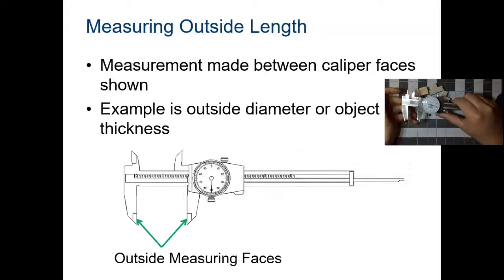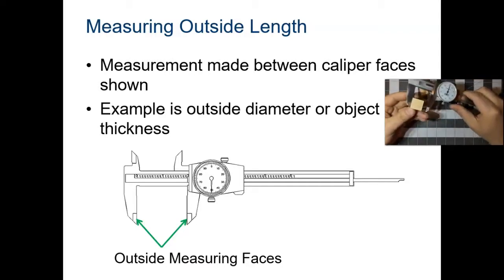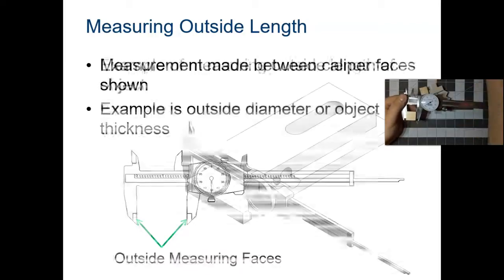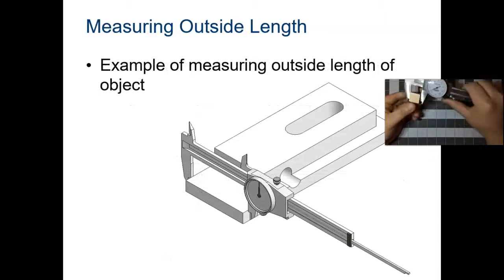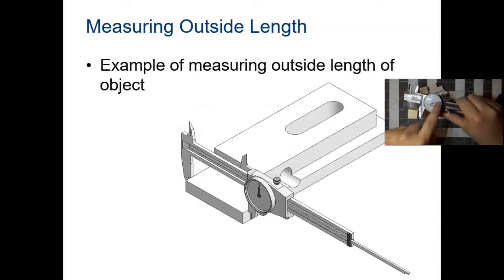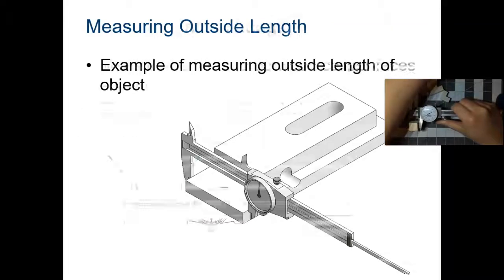If you're measuring the outside length of an object, the measurement is made between the caliper faces shown. So this would be an example. That's how you would measure the outside length. I'll teach you how to read the measurement in a moment.